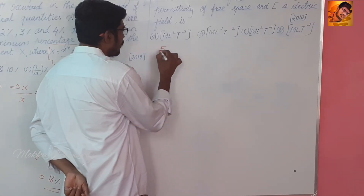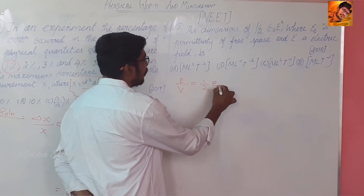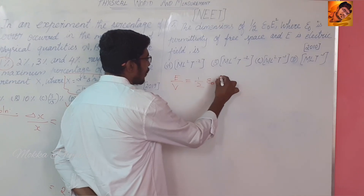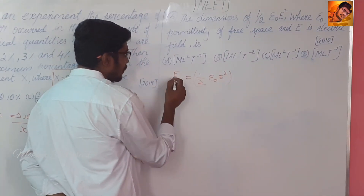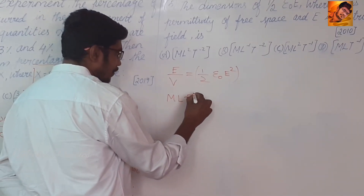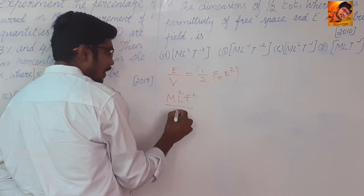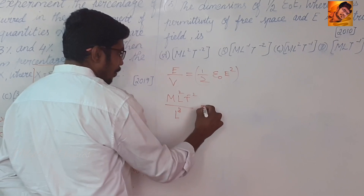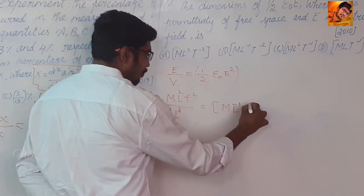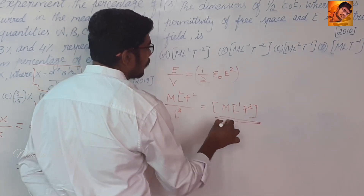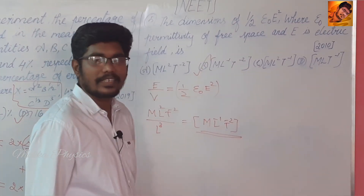Energy density by volume for a capacitor is epsilon-not times E squared. Using dimension: energy is force into displacement, divided by volume (meter cubed). The overall dimension works out to M L⁻¹ T⁻². So option B is the correct answer.